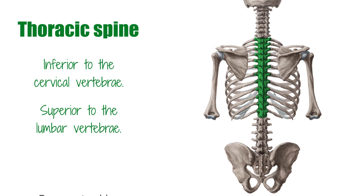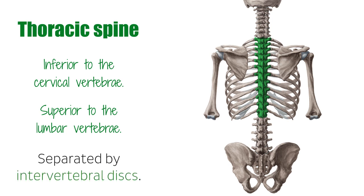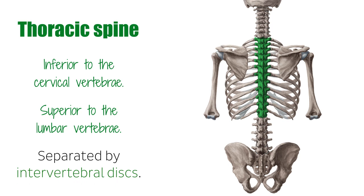The vertebrae are separated by intervertebral discs of fibrocartilage, which are flexible cartilage discs located between the bodies of two adjacent vertebrae that allow movement in the spine and have a shock-absorbing or cushioning function as well. In addition to providing shock resistance and cushioning, the discs also help bind adjacent vertebrae together.